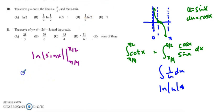So that gives me the natural log of the sine of pi over 2 which is 1 minus the natural log of the sine of pi over 4 which is the square root of 2 over 2. Now the natural log of 1 is 0 so that goes away.